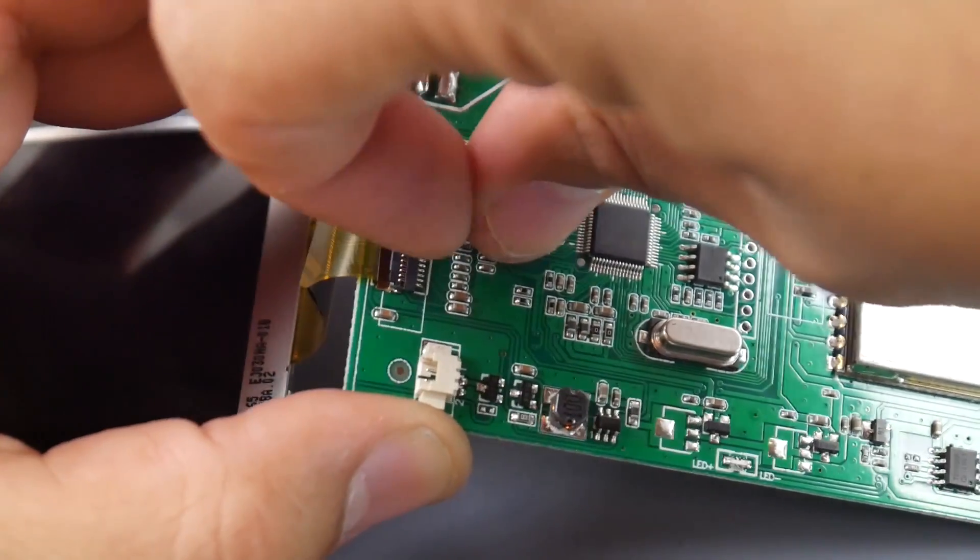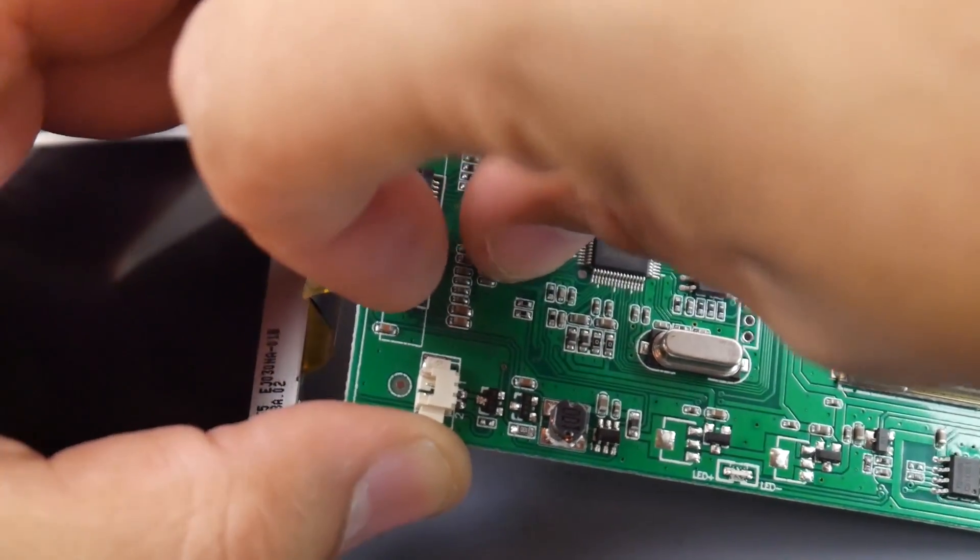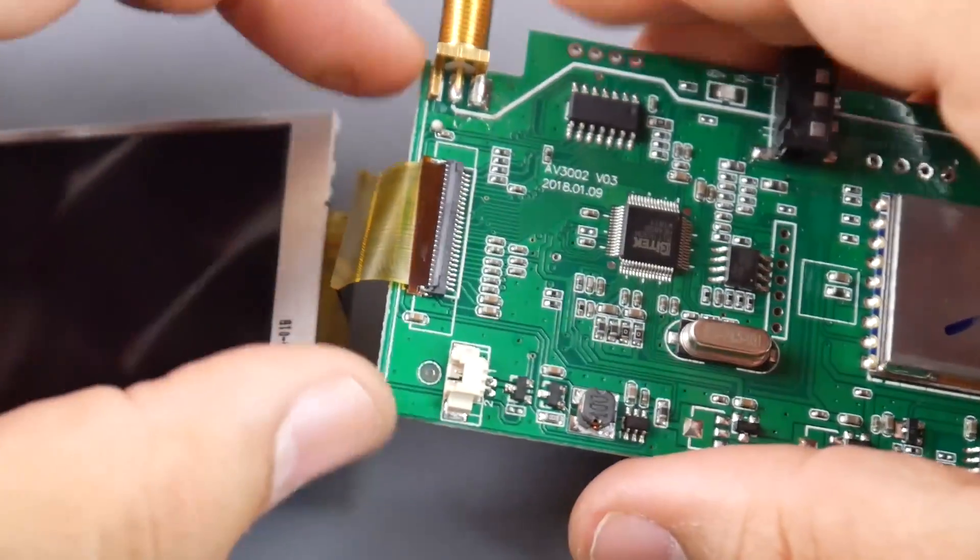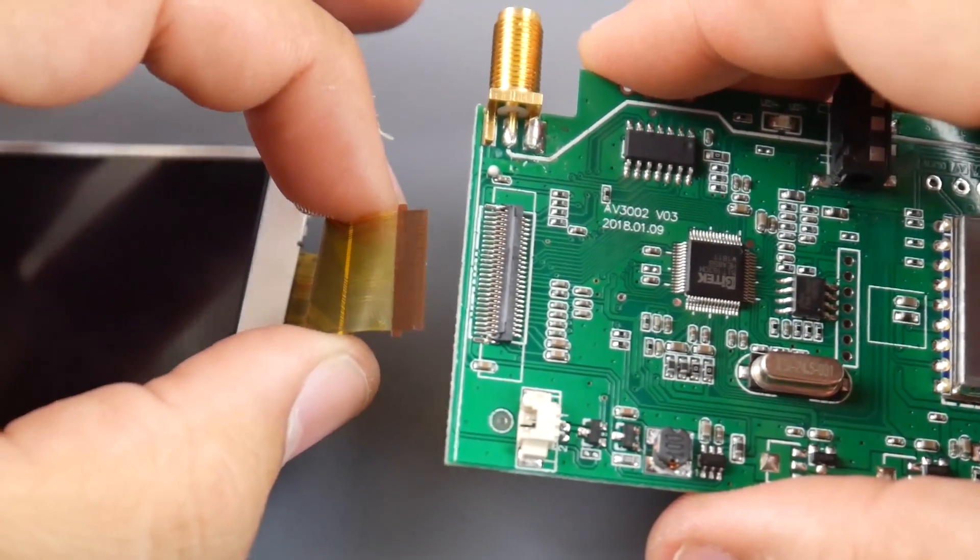Next, you want to go ahead and pop off the ribbon cable. There's these two black pieces, the one all the way to the edge of the board. Just lift it up slightly. It'll pop up like a hatch, and you can just remove it.